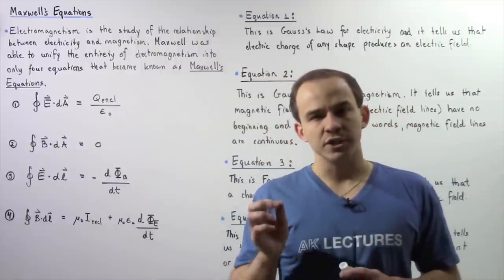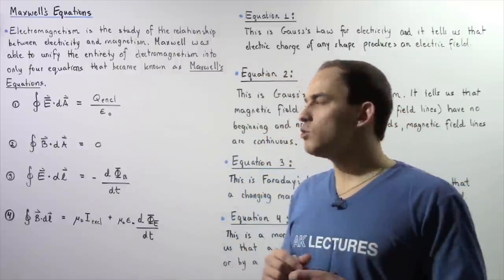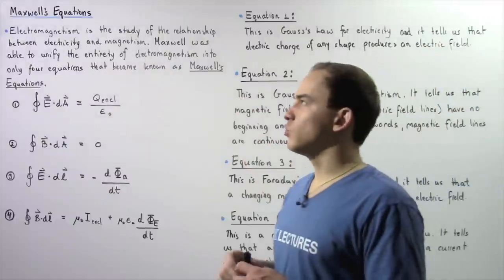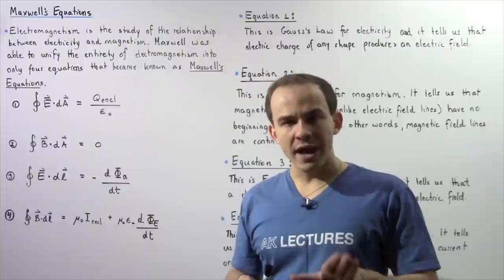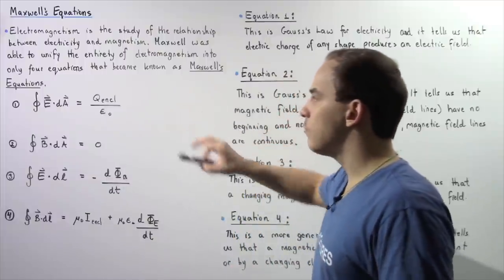a set of four differential equations which are now known as Maxwell's equations of electromagnetism. These four equations are shown on the board.